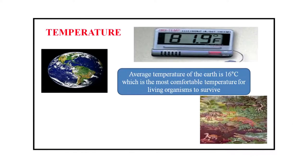The next condition on the Earth for sustaining life is temperature. Average temperature of the Earth is 16 degrees Celsius, which is the most comfortable temperature for living organisms to survive.